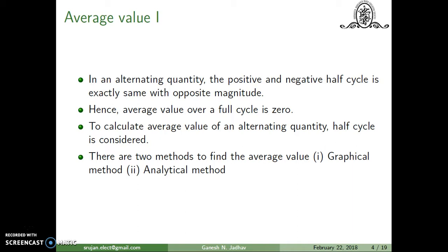In an alternating quantity, the positive and negative half cycle is exactly the same. We are going to study the average value. In an alternating quantity, the positive and negative half cycle is exactly the same with opposite magnitude. Hence, if we take the average value over a full cycle, the positive and negative values will get cancelled and the average value is zero. To calculate the average value of an alternating quantity, only the half cycle is considered.